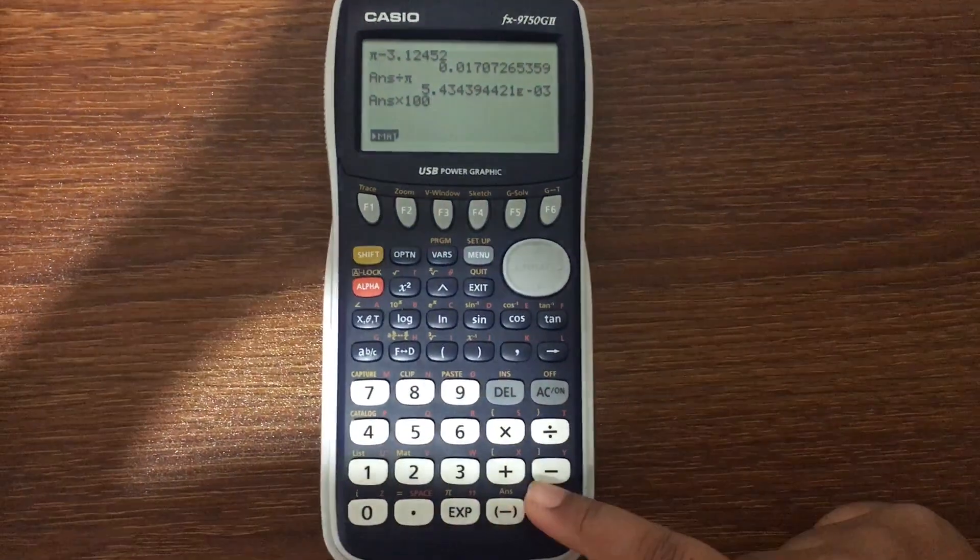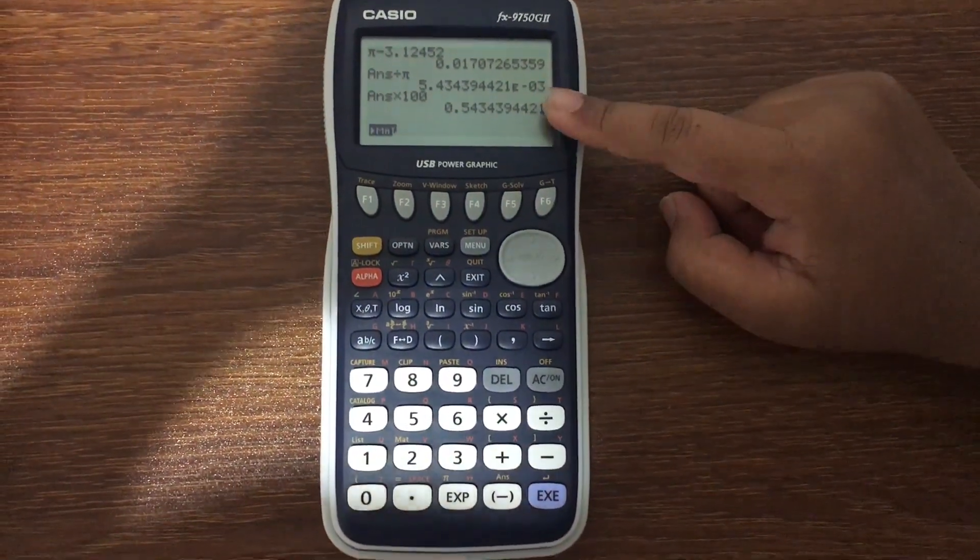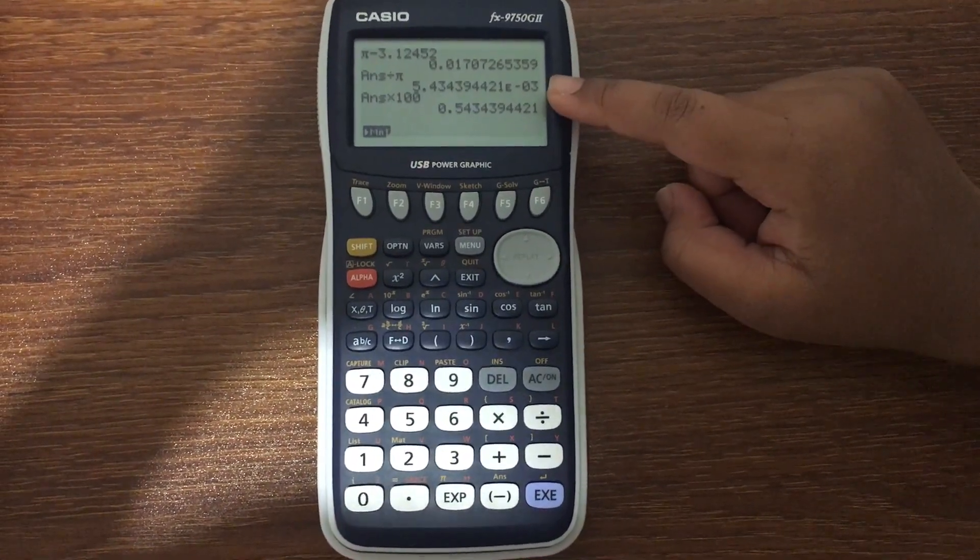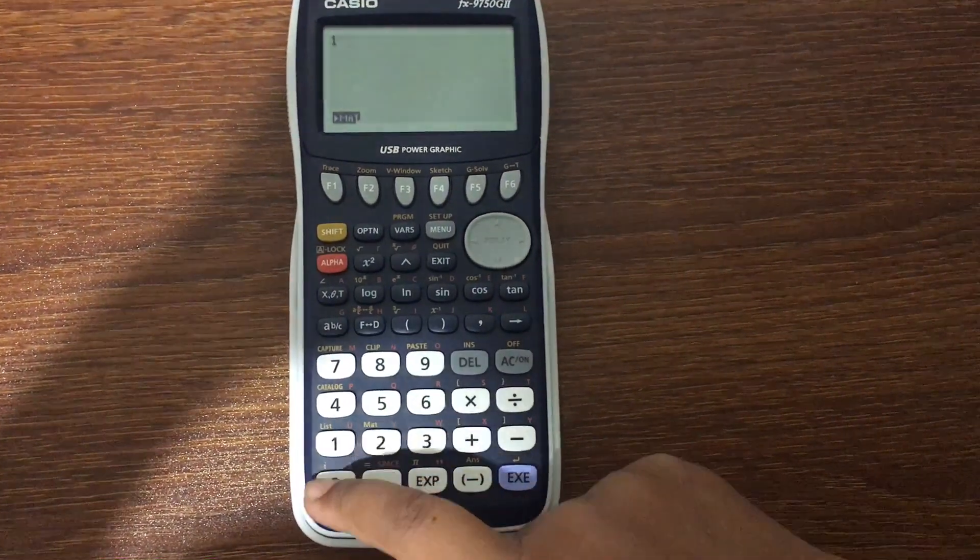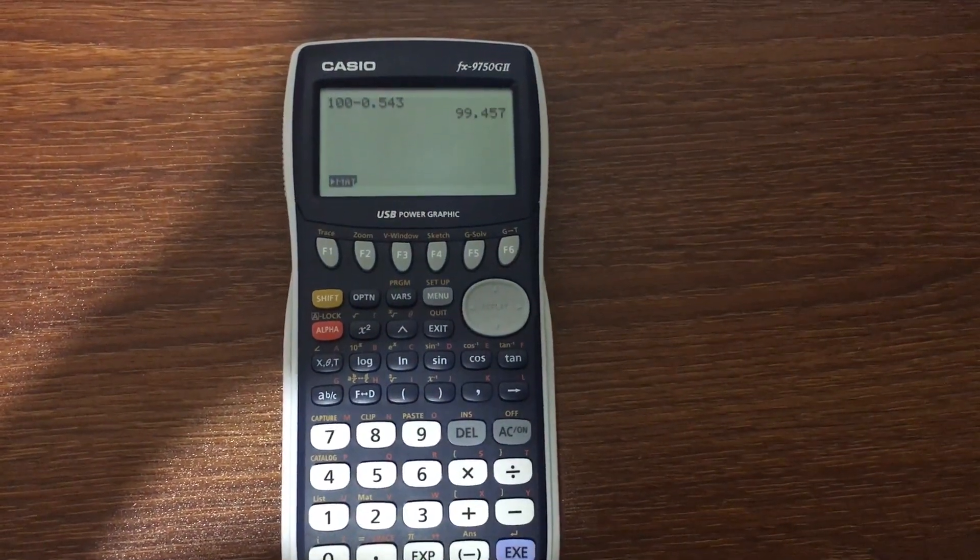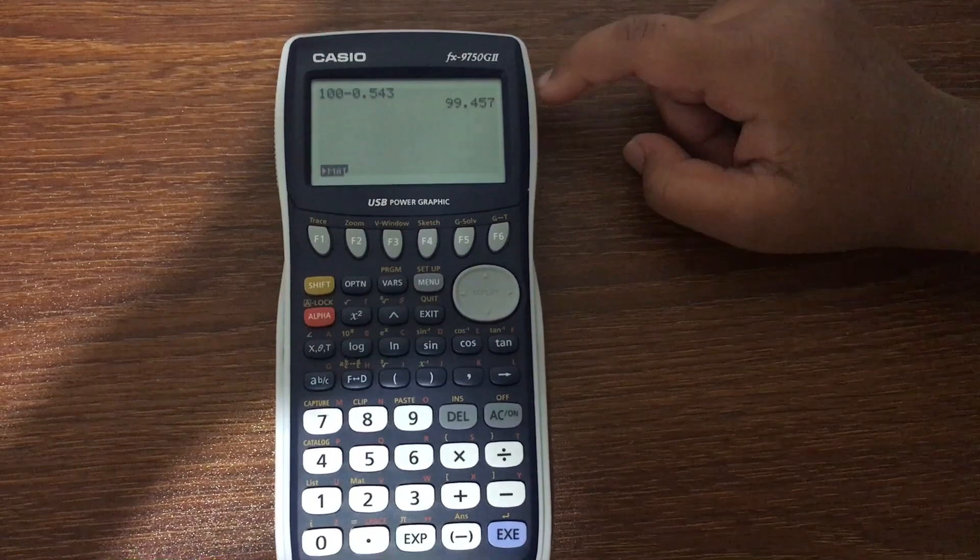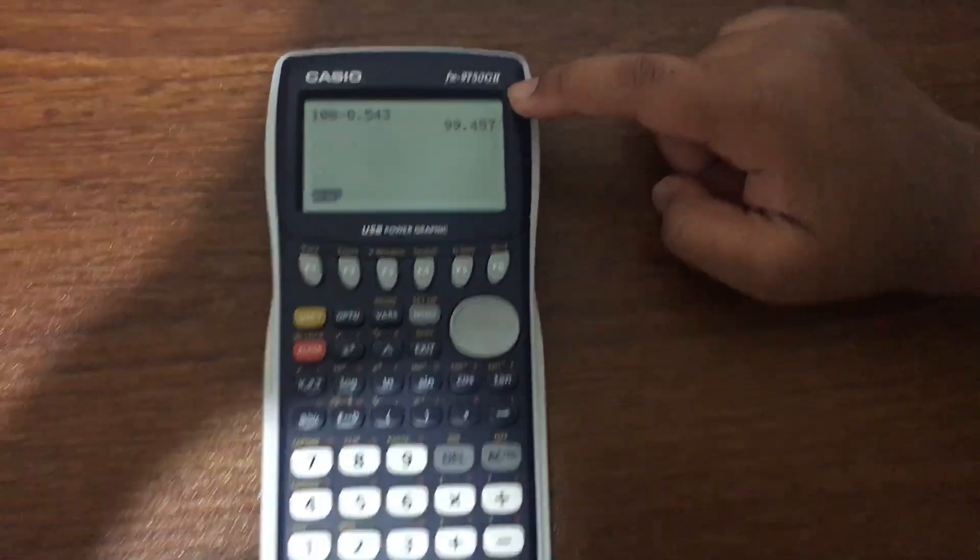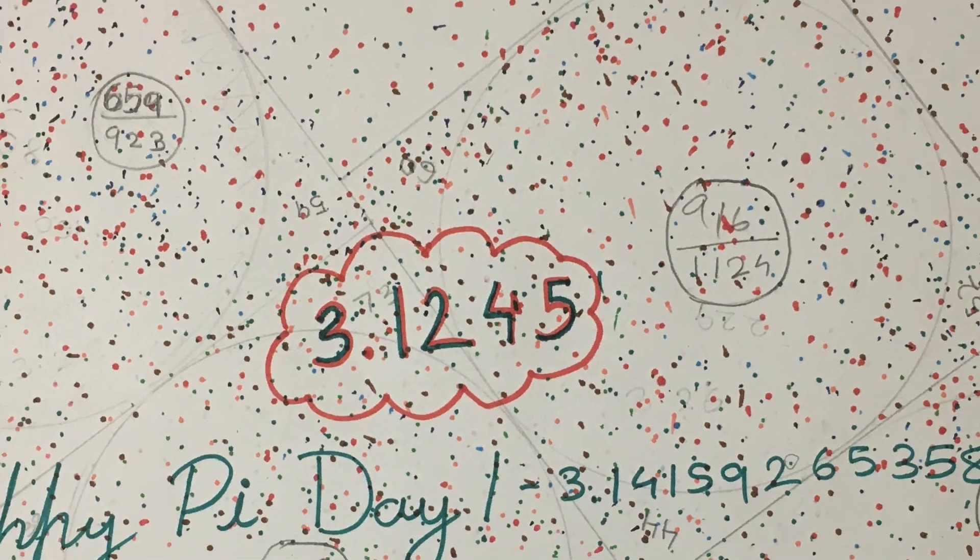Now we multiply our answer by 100, which gives us 0.543 percent. If we subtract 0.5434 from 100, we get 99.4566 percent. This is our accuracy percentage. Happy Pi Day!